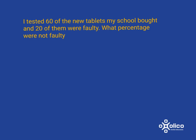If we read a question like this: I tested 60 of the new tablets my school bought and 20 of them were faulty. What percentage were not faulty? The only extra caution here is to be very careful — they're asking about the percent that were not faulty, but they gave you information about the number that were faulty. But that's very easy to get around: if 20 out of 60 were faulty, then 40 of them were not faulty.